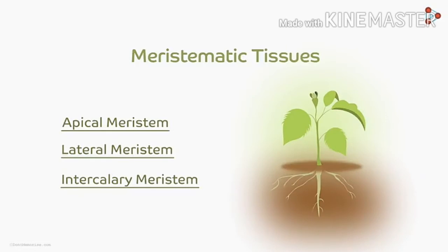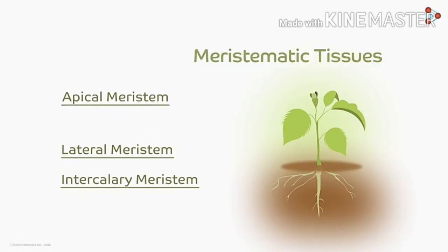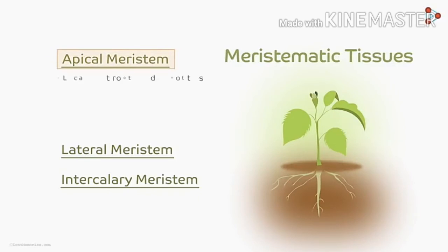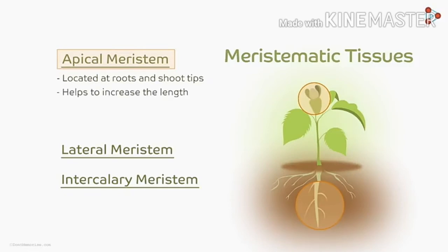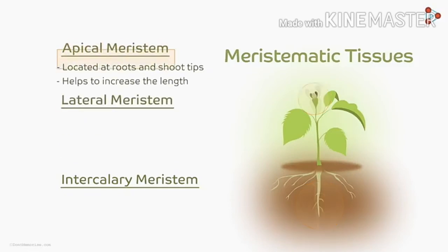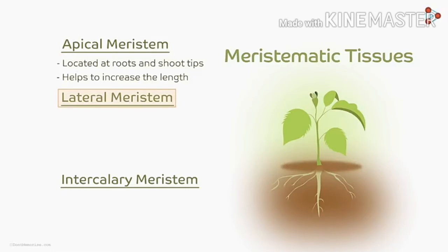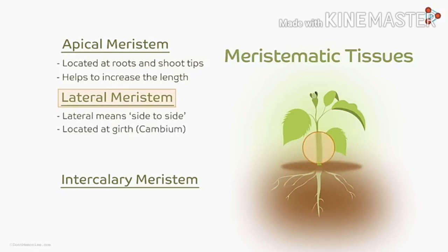Don't just memorize these terms — let me make them easy for you. First is apical meristem, which is only present at roots and shoot tips, and it helps to increase the length of a plant. Second is lateral meristem. Now where is it present? Here 'lateral' means side to side. That means lateral meristem is located at the girth of a plant, and it helps to increase the girth.